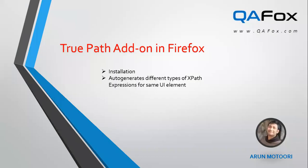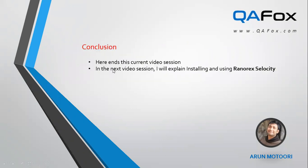So I have practically demonstrated how to install TruePath in Firefox browser, and also explained how to auto-generate different types of XPath expressions for the same UI element using the TruePath add-on in Firefox browser. We are done with the current video session. In the next video session, I will explain installing and using another Firebug and FirePath alternative add-on — Ranorex Selocity. See you in the next video session. Thank you. Bye.